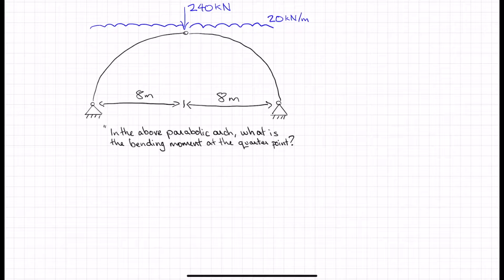One very important thing to note is this is a parabolic arch. Why is that important? Well, because if you have a linear UDL load, like the 20 kN per meter applied load, that doesn't actually cause any bending moment in the arch. All the bending moment is actually created by that 240 kN concentrated force. But nevertheless, we will consider the whole structure. And first of all, we need to resolve for the reactions.